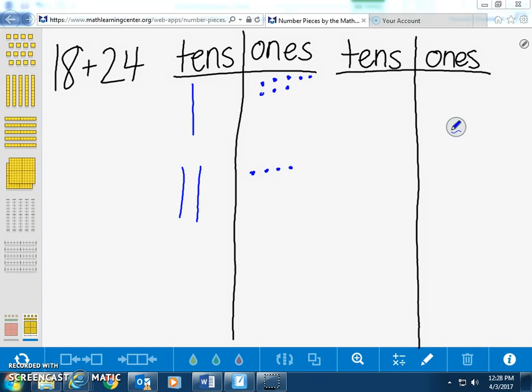Now, what is this going to look like using an algorithm, which is an abstract model using numbers and symbols? We are going to record 18 plus 24.